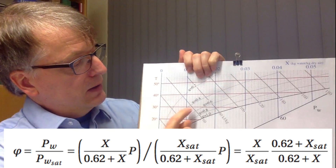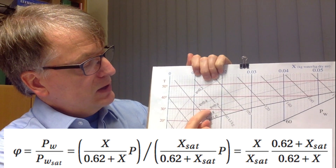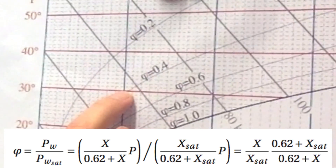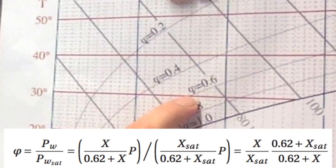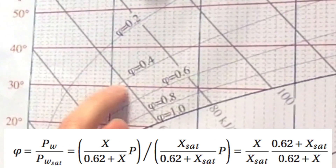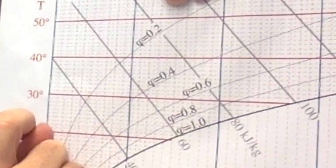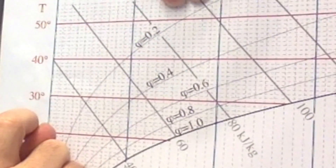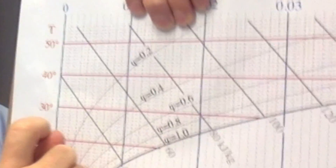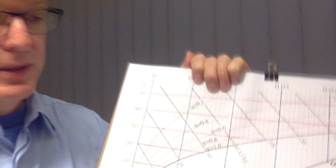So we can say that it's essentially a linear thing along the temperature line. To find the 0.5 here, you take the middle point along a constant dry temperature line. So that's the way to do it.